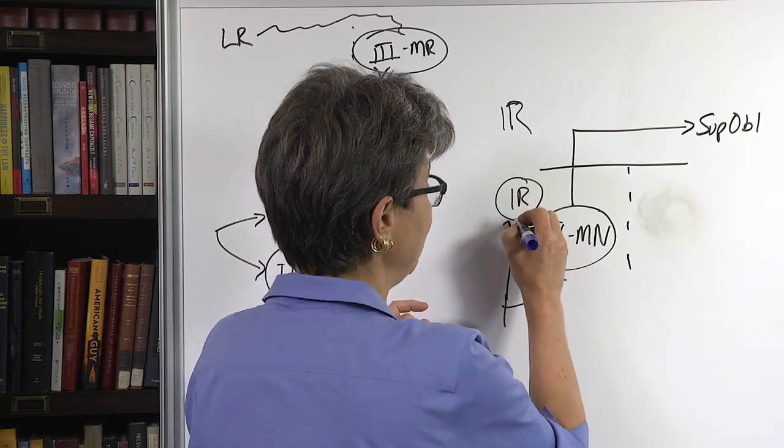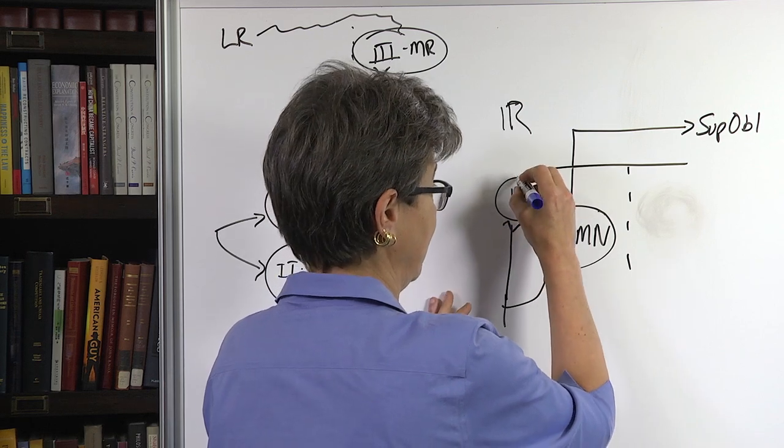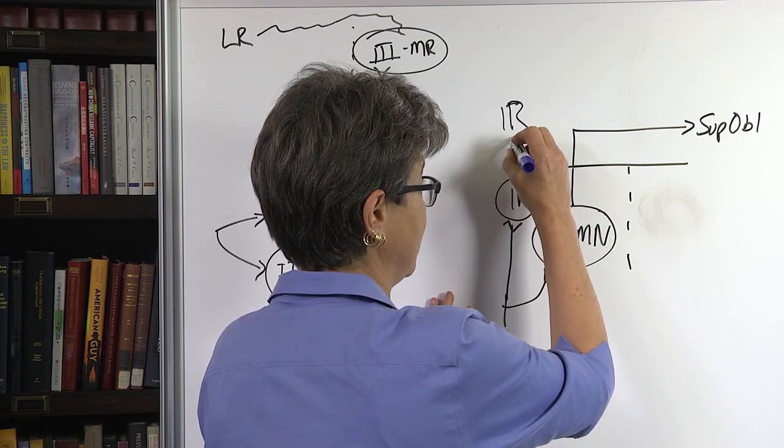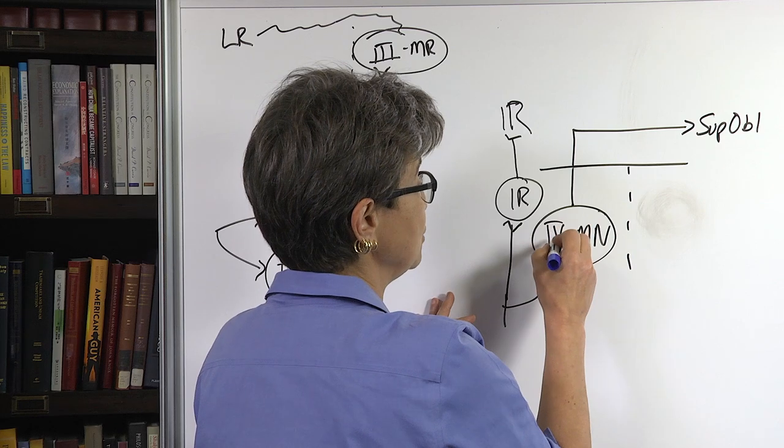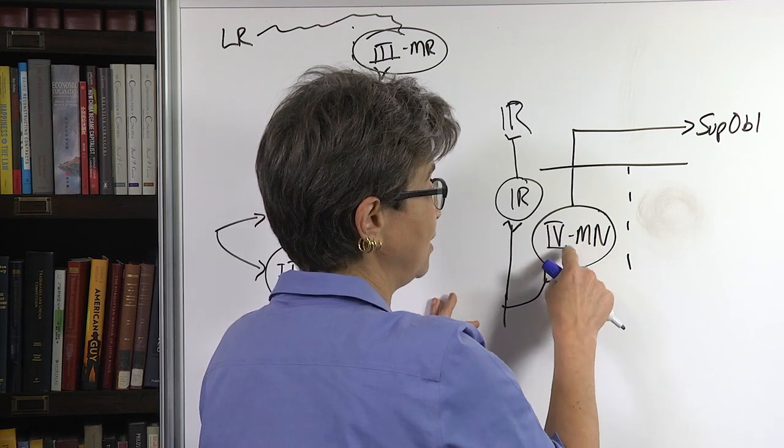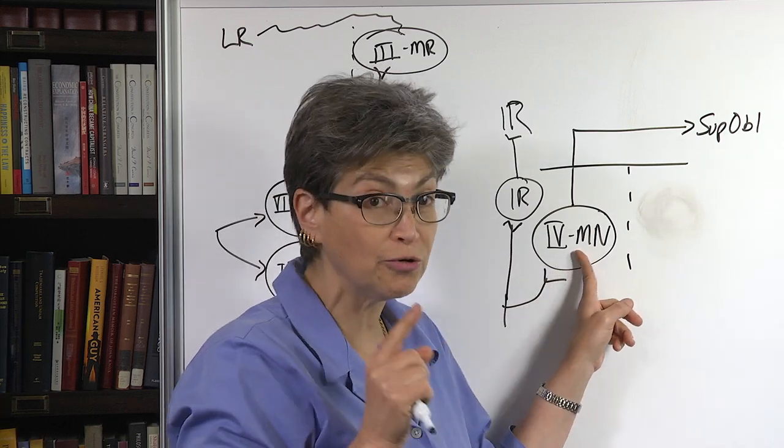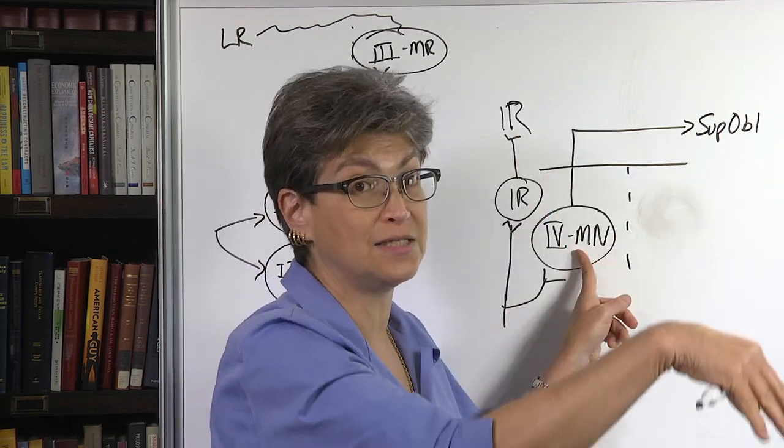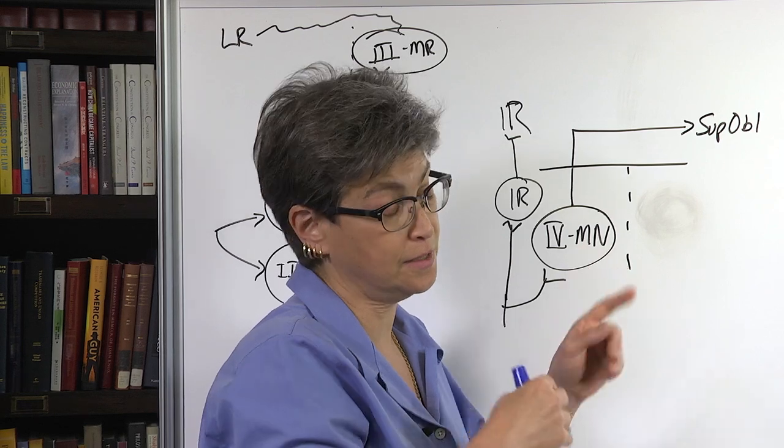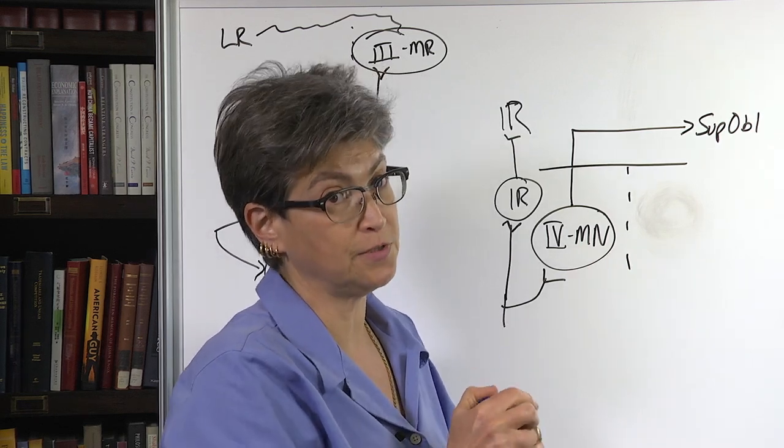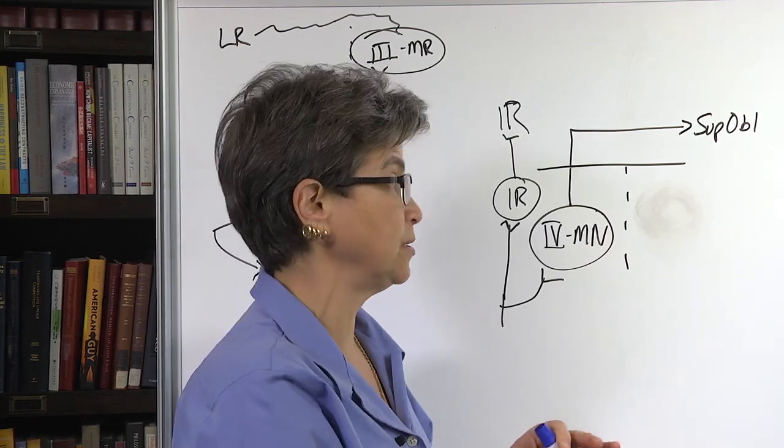What happens is that the inferior rectus is innervated by a motor neuron on the same side, but the superior oblique is innervated by a motor neuron that is on the opposite side. As you know, the trochlear nerve crosses as it exits the pontomesencephalic junction, the junction between the pons and the midbrain.